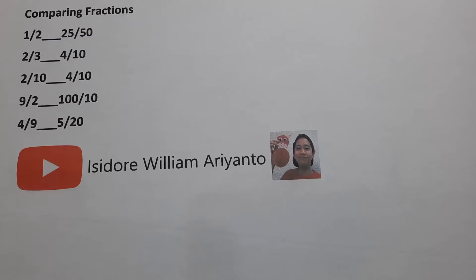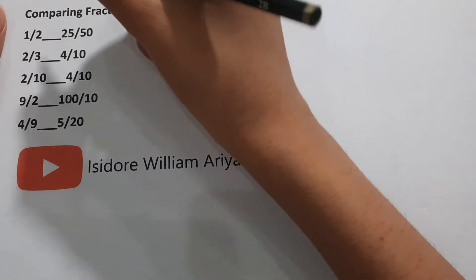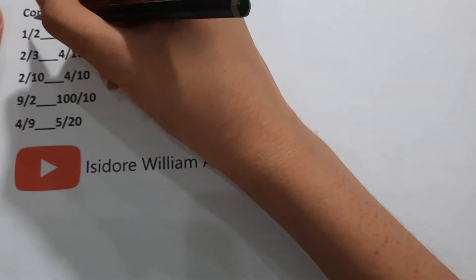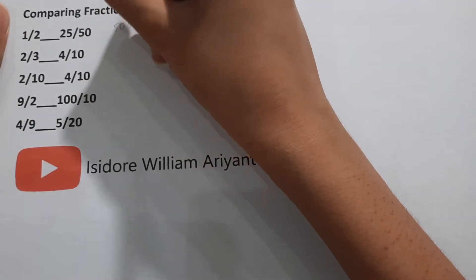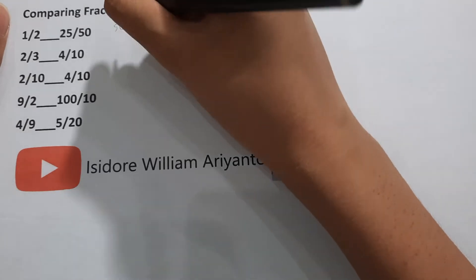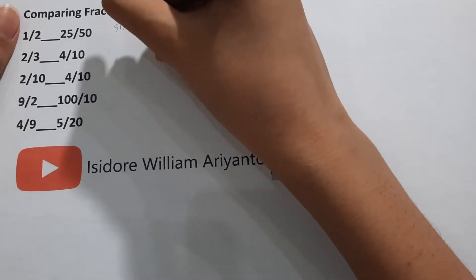Hello friends, I'm Isidurla Marianto. Today we will be comparing fractions. It is actually pretty simple. 1 over 2 is equal to 50%. You may change fractions to decimals or percentages so you can compare them better.